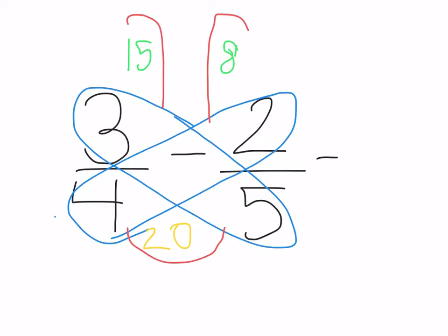So then your answer this time, instead of adding the two antennas, you would subtract one from the other. So 15 minus 8 is 7. And then you would keep the bottom the same as before, so just the bottom number, so 20. So your answer would be 7 over 20.